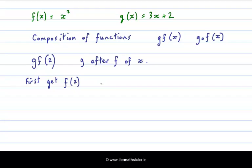So first get f of 2, which is 2 squared equals 4. Then we get g of the result, which is 3 times 4 plus 2, which is 12 plus 2, which is 14. So we have that g after f of 2 is equal to 14.